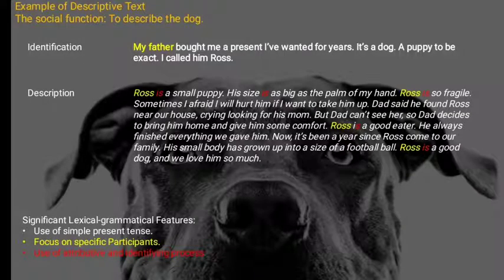The generic structure of descriptive text consists of two parts. The first is identification, which contains the introduction of a person, place, animal, or object that will be described. The second is description, which contains a description of something — such as an animal, thing, place, or person — by describing its features, forms, colors, or anything related to the subject.